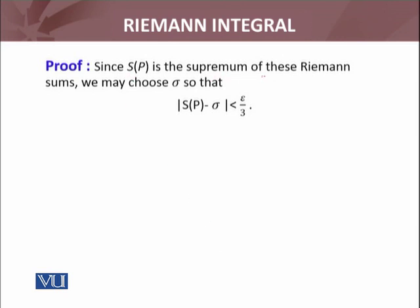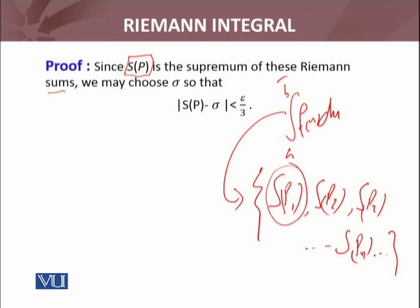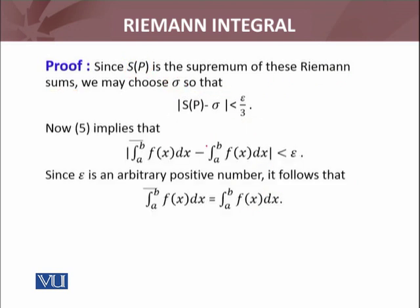Since S(P) is the supremum of the Riemann sums, now look, the upper integral is the infimum of S(P₁), S(P₂), all the upper sums, infinitely many S(P) and so on. This is the infimum. But we proved that for a particular partition, the upper sum is the supremum of all Riemann sums. Now if S(P) is the supremum of all Riemann sums and σ is a Riemann sum, we may choose σ such that |S(P) - σ| < ε/3.